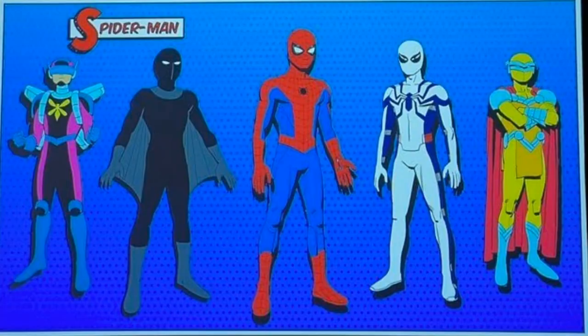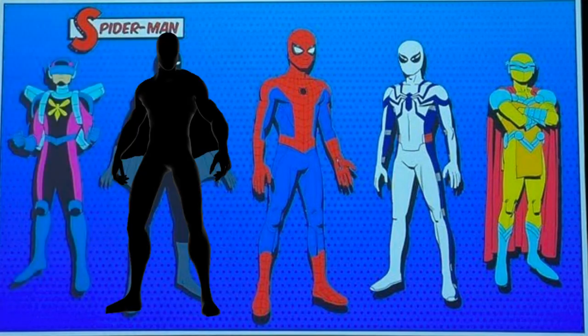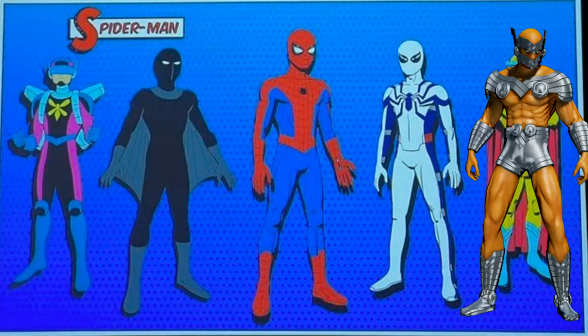Peter is surrounded by a bunch of other suits in this picture. On the left you have Hornet, one of Peter's alternate superhero identities when he was being hunted by cops. He also has more than one, including Dusk and Prodigy.